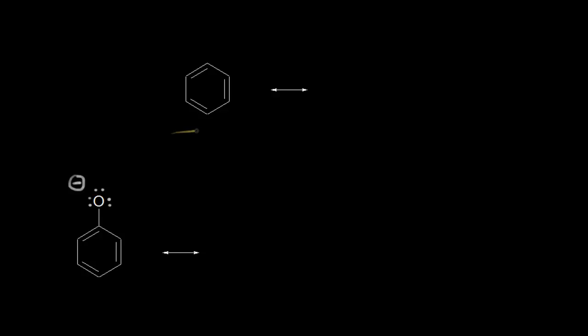Here is the dot structure for benzene, C6H6, and we can draw a resonance structure for this.